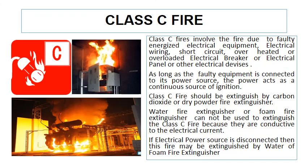Class C fires involve fires due to faulty energized electrical equipment, electrical wiring, short circuits, overloaded electrical breakers, electrical panels, or other electrical devices. Class C fires are very common in both homes and industrial premises. As long as the faulty equipment is connected to its power source, the power acts as a continuous source of ignition. Class C fire should be extinguished by a carbon dioxide fire extinguisher or dry powder fire extinguisher. Water or foam fire extinguishers cannot be used on Class C fire because they are conductive to electrical current. If the electrical power source is disconnected, then this fire may be extinguished by a water or foam fire extinguisher.